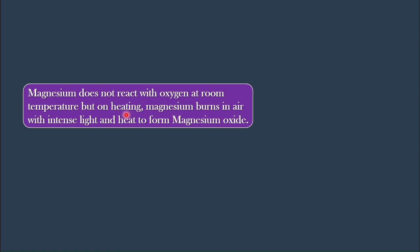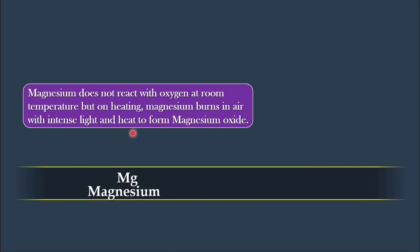Magnesium does not react with oxygen at room temperature, but on heating, magnesium burns in air with intense light and heat to form magnesium oxide. This reaction is exothermic, meaning it releases energy in the form of heat and light.